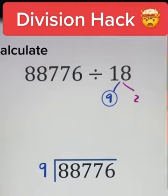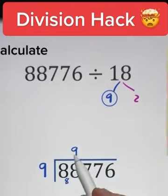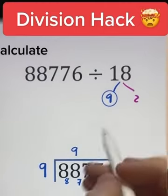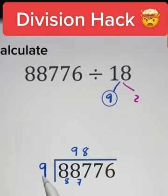I know that 9 does not divide into 8, so I carry the 8. I know that 9 divides into 88 nine times, as 9 times 9 is 81, and the remainder is 7. I know that 9 divides into 77 eight whole times, as 9 times 8 is 72, so the remainder is 5.